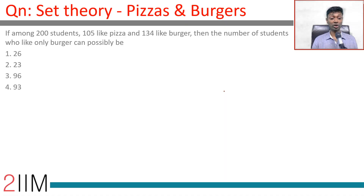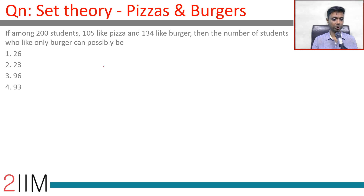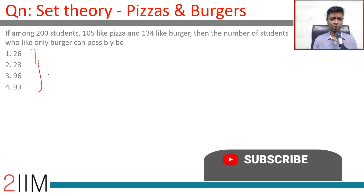If among 200 students, 105 like pizza and 135 like burger, then find the number of students who like only burger. We need to find the minimum number of people who can like only burger.